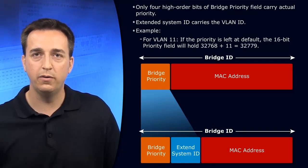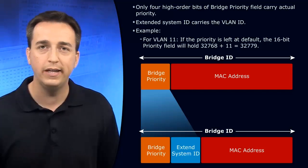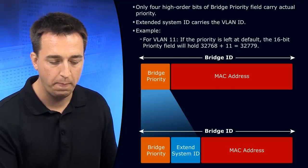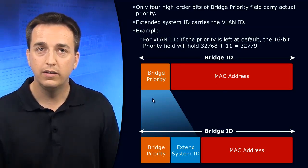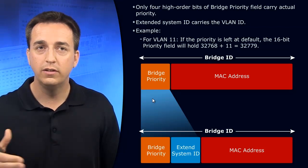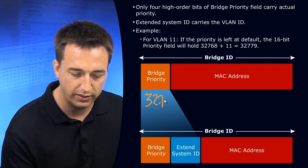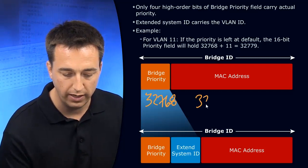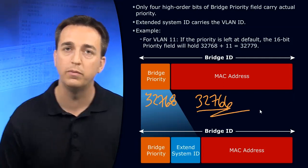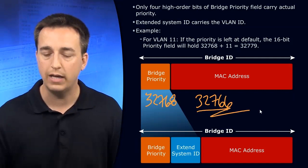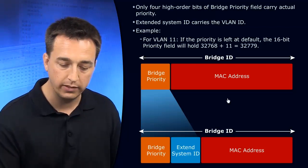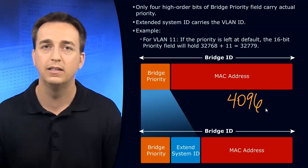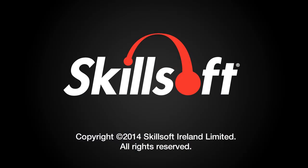There is a downside to this, though. In the olden days with traditional Spanning Tree Protocol, you could increment your Bridge Priority by any single value — for example, using 32,766 instead of 32,768. But nowadays you can't do that. Anytime you change a Bridge Priority, it has to be in increments of 4,096.